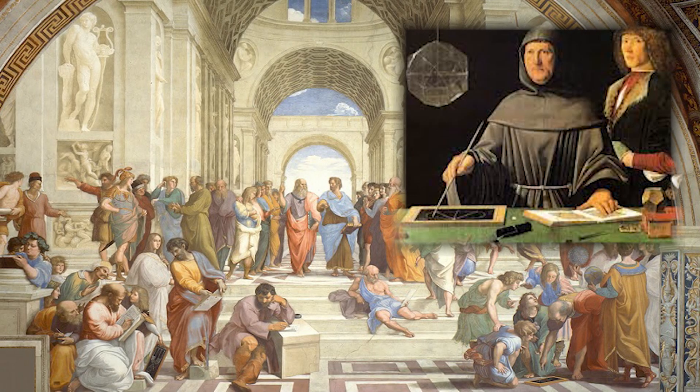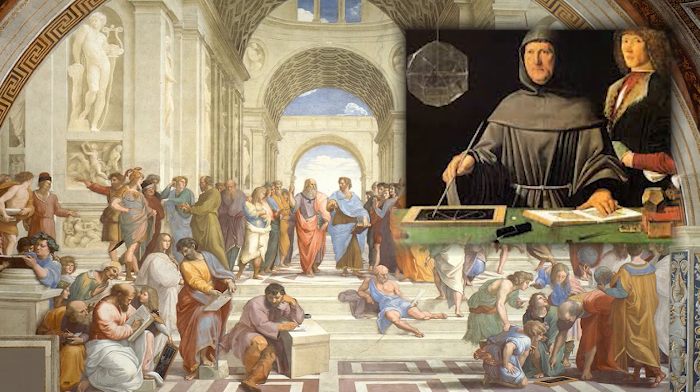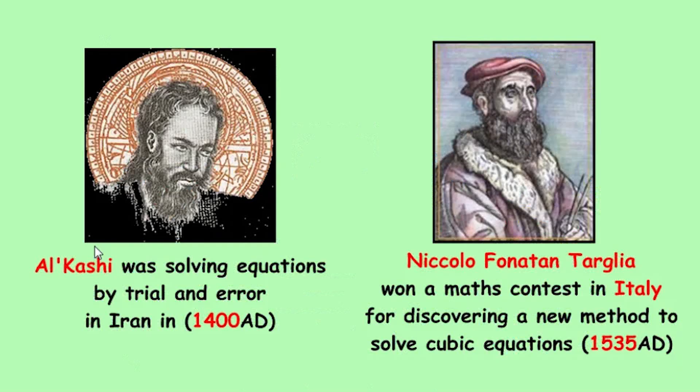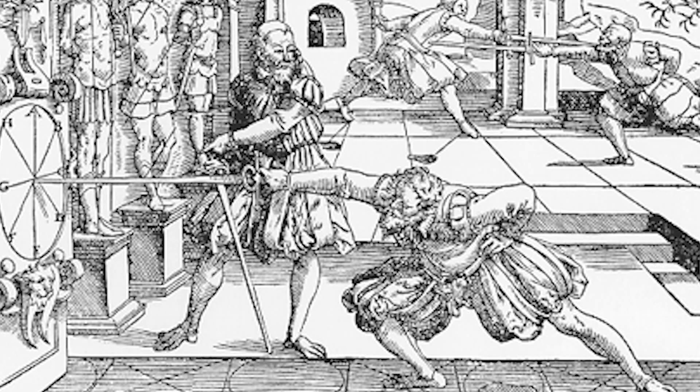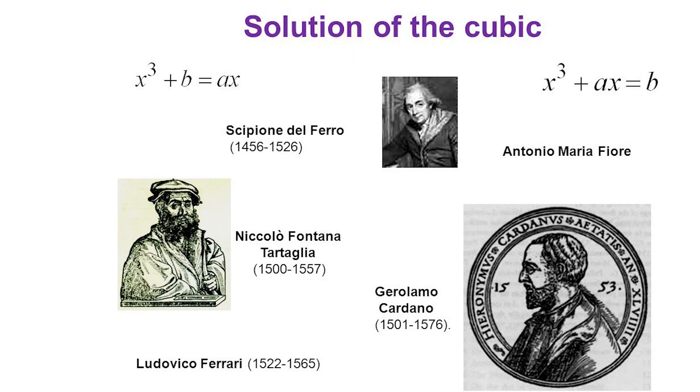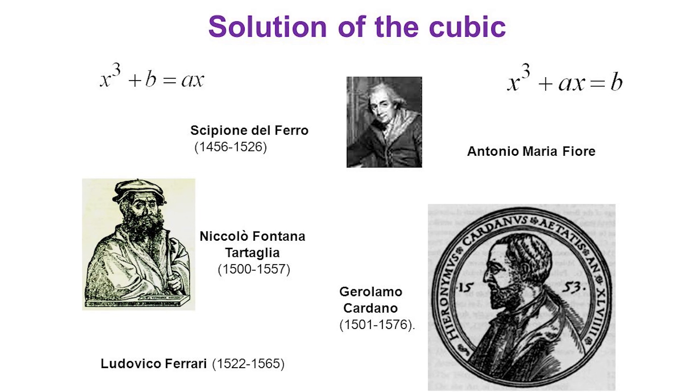After Fibonacci, little progress is made towards solving cubic equations for almost 200 years until the 16th century, when Italian mathematicians started public duels where they used to challenge each other for the solutions of cubics and earn money and fame in this way.